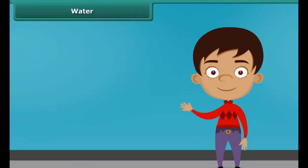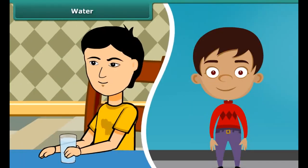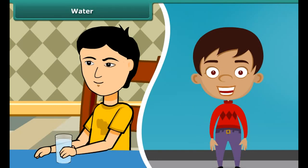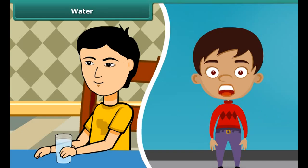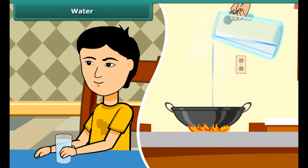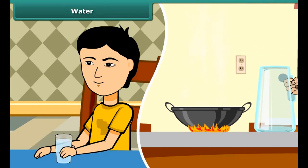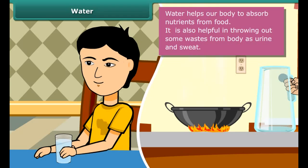Now let us know about water, which is also an important constituent of our food. A body gets most of its water in the form of liquid; in addition we also add water while cooking the food. Water helps our body to absorb nutrients from the food. It is also helpful in throwing out some wastes from the body as urine and sweat.